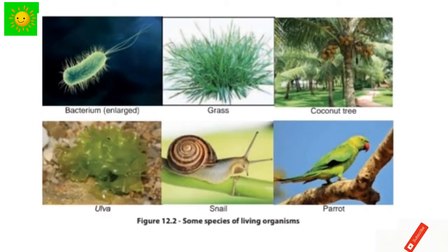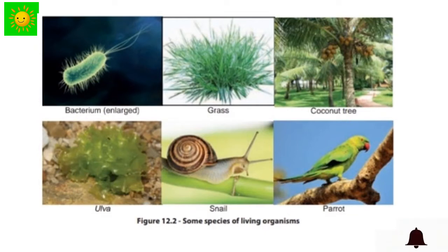This figure shows you some species of living organisms. Bacterium, grass, coconut tree, wolf, snail, and parrot are the examples.